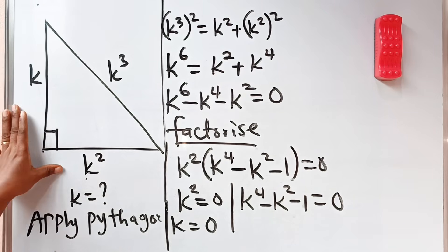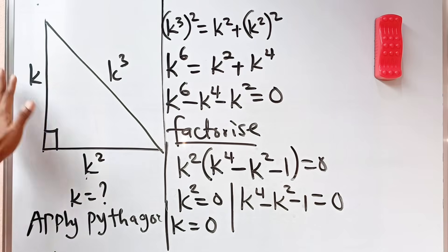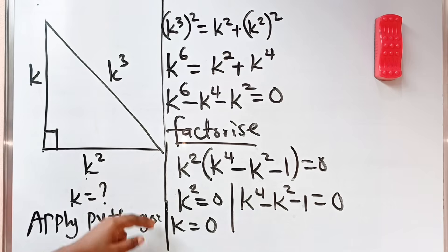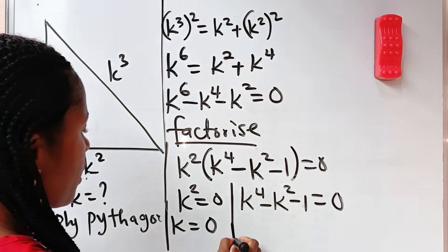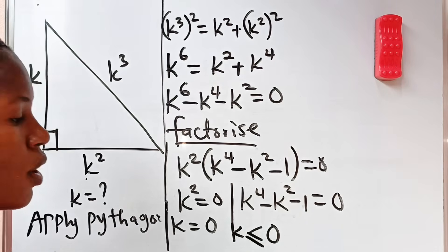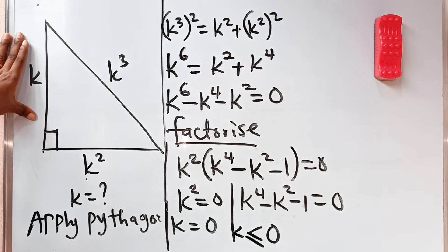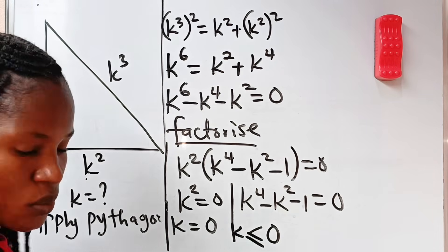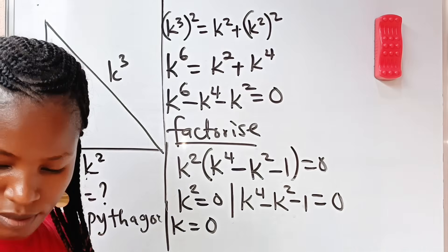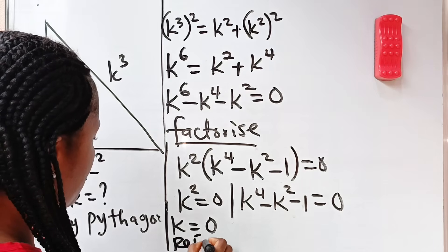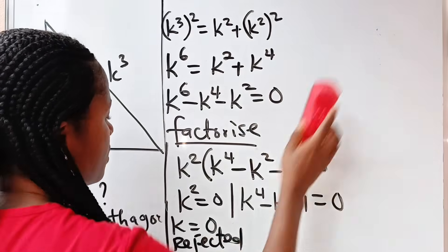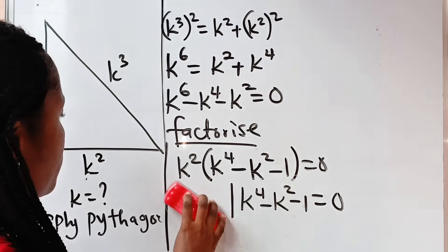Now let us look at this diagram. You can see that what we have here are lengths, and our lengths can never be equal to 0. K can never be less than or equal to 0 because we are talking about lengths. Therefore, we are going to reject that answer — it is not possible. So we are now going to focus on the other equation.